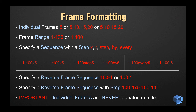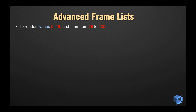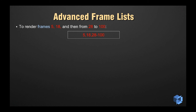Armed with this rule, we can now get quite creative with the advanced frame list. You can render individual frames and sequences of frames in the same job in Deadline, such as frames 5 and 18 followed by the frame sequence of 28 to 100.